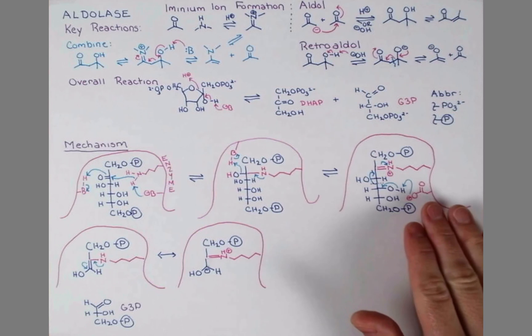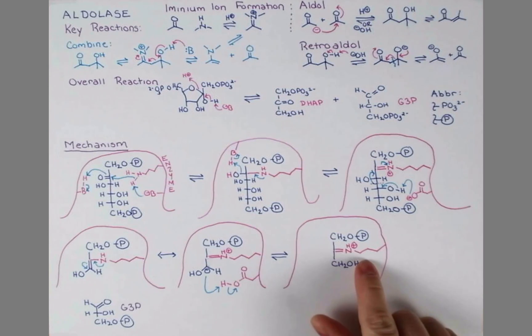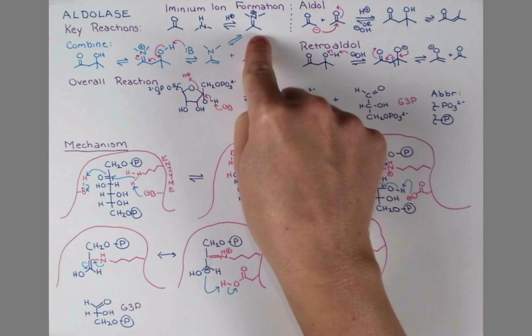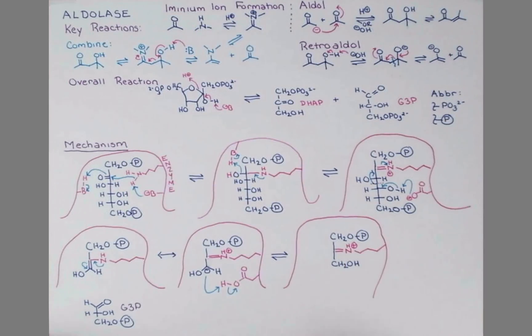Now remember, we protonated this aspartate residue here. Let's draw that back in, in its protonated form. The protonated side chain can provide the proton to react with this anion. Now we have an iminium ion, just like we had up here. And remember, I mentioned that iminium ions can reverse forming ketones again.